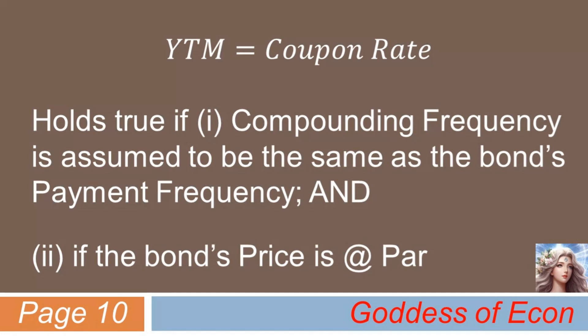You must have noticed that the yield to maturity came out the same as the coupon rate in our previous two examples. However, this would not hold true in every case. You can safely assume the yield to maturity is exactly the same as the coupon rate only in the cases where the compounding frequency used in discounting is consistent with the coupon payment frequency, and where the bond is priced at par. In other cases, the equality condition above would not hold. So be aware.